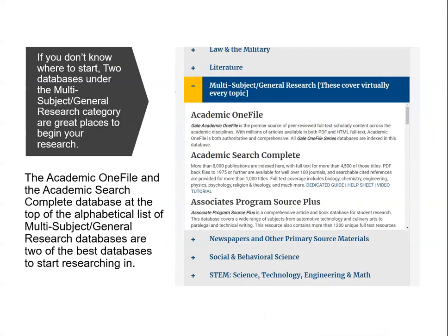Two of our best, general, all-around, good-for-just-about-everything databases are listed under the Multi-Subject General Research category, and they appear at the top of the list because the list is alphabetical. These are the Academic OneFile and the Academic Search Complete databases. If you don't know where to start your research, try one or both of these databases.